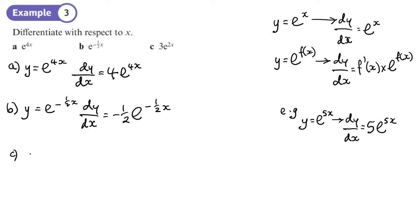And then c, y equals 3 lots of e to the 2x. So whatever we do when we work out dy dx is going to get times by 3. So 3 times, then the power f of x is 2x. That differentiated is 2 times by e to the 2x. Again, the power doesn't change. So that gives us 6 e to the 2x.